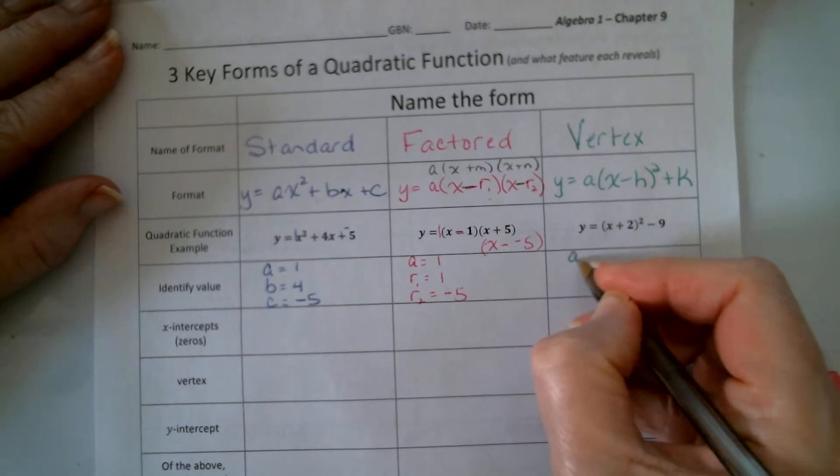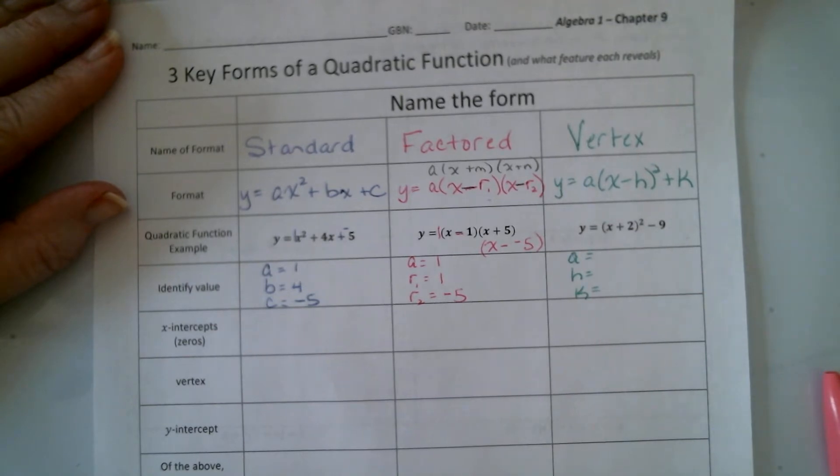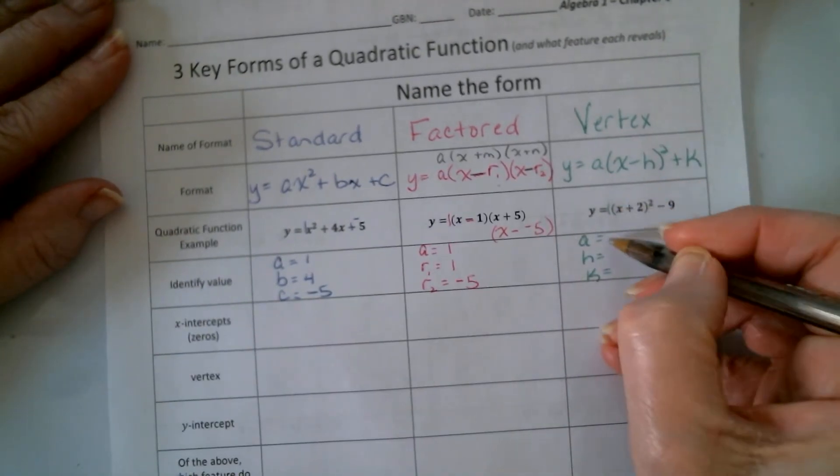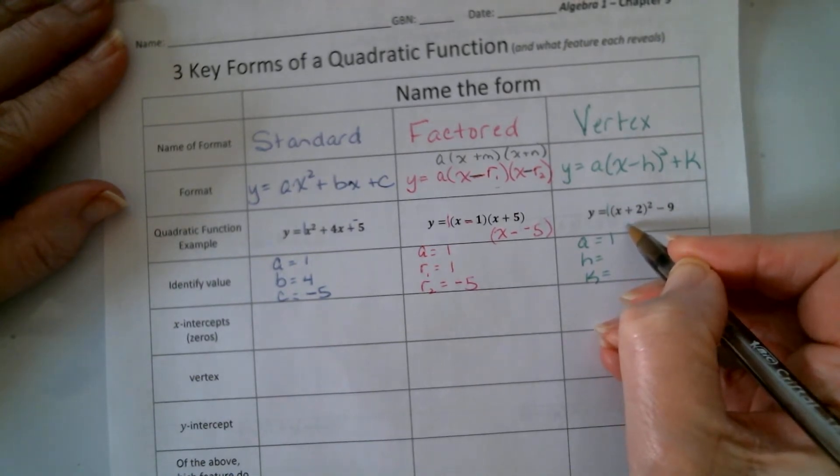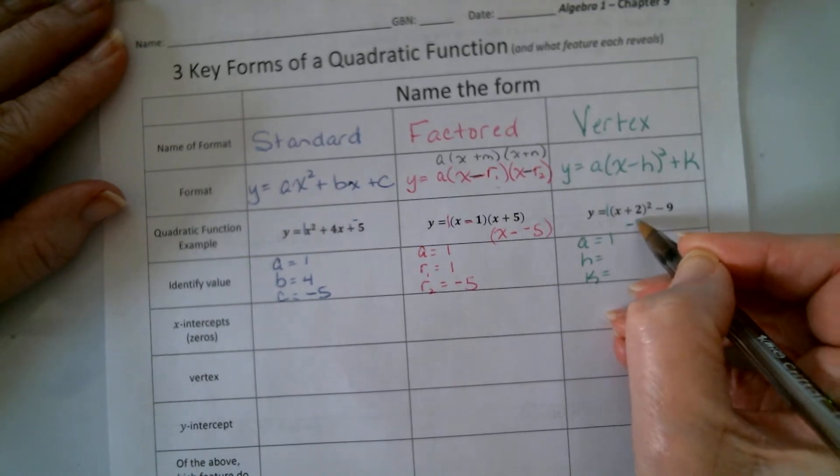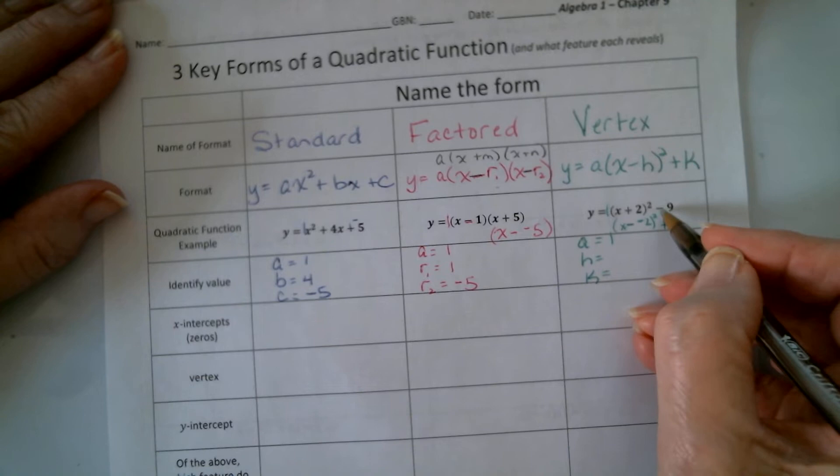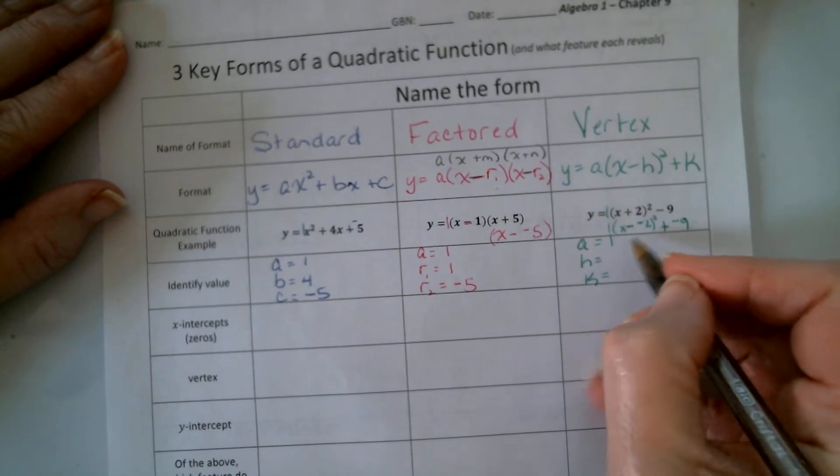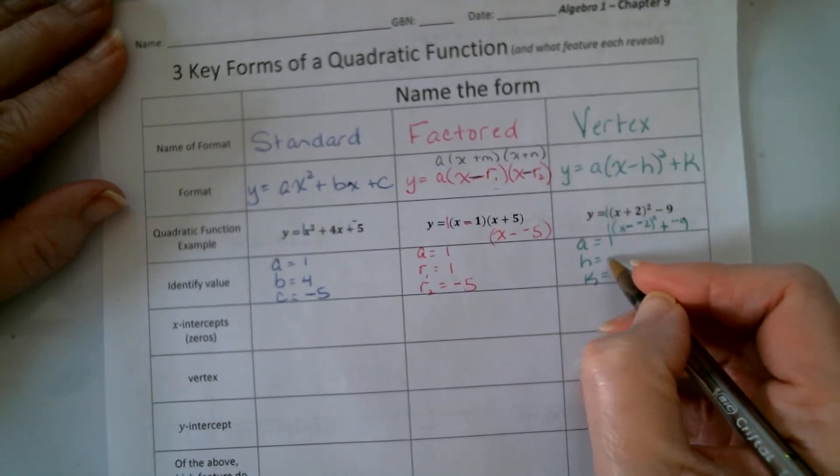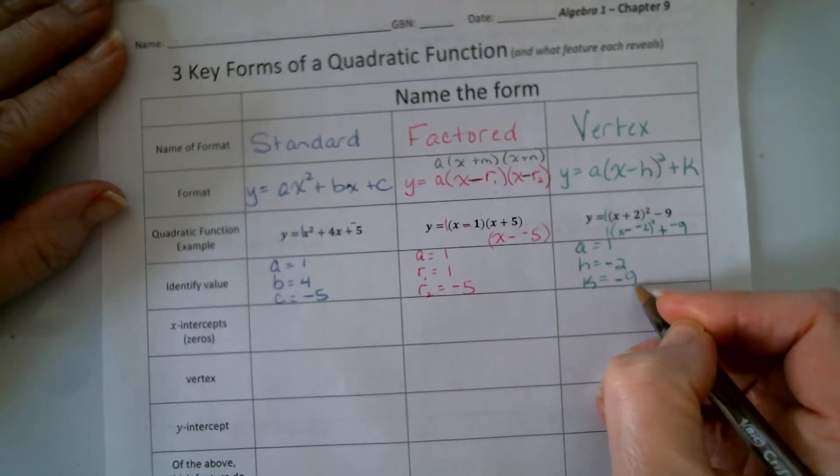We're going to move over here and identify a and h and k. Let's see if you can do that for a sec. Another issue where this is addition, but our format says subtraction, so we must be subtracting a negative. All right. Same thing here. Well, our format is addition, so to get subtraction, it must have been that we were adding a negative, right? So h is negative 2, and k is negative 9. Okay.